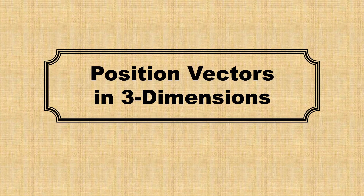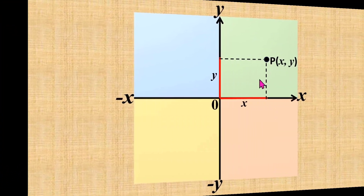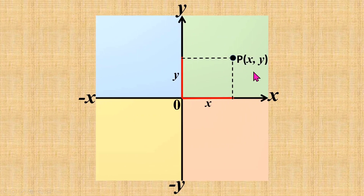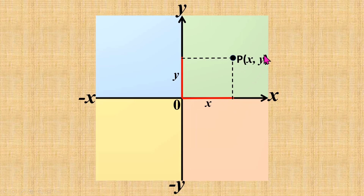In this video, I'm going to talk about position vectors in three dimensions and show you how to use position vectors in answering questions. In a two-dimensional plane, the position of a point is represented by the coordinate system X and Y, where X represents the distance of the point from the origin along the x-axis and Y represents the distance of the point from the origin along the y-axis.